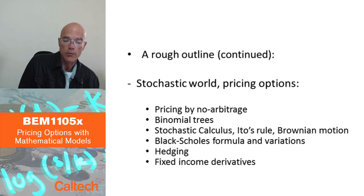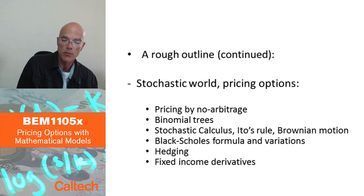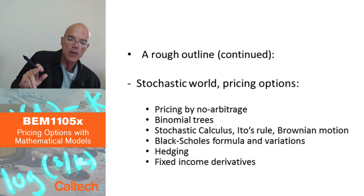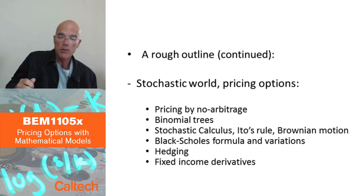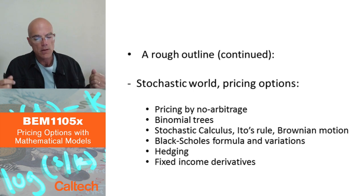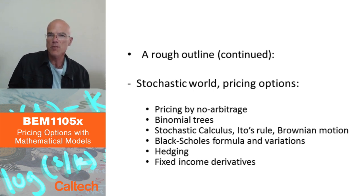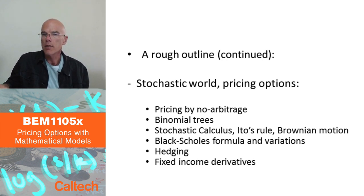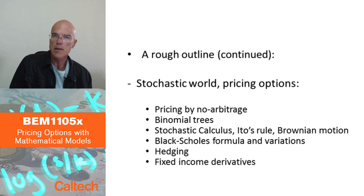We are going to derive the Black-Scholes formula and variations on the Black-Scholes formula for different options and different situations. The second main part of the course is hedging, or risk management, in terms of having to deliver a random payoff — how can you make sure that you have enough money to do that? There will be a notion of replication of random payoffs, or hedging of random payoffs. So pricing and hedging are the two main things we want to do in this course.